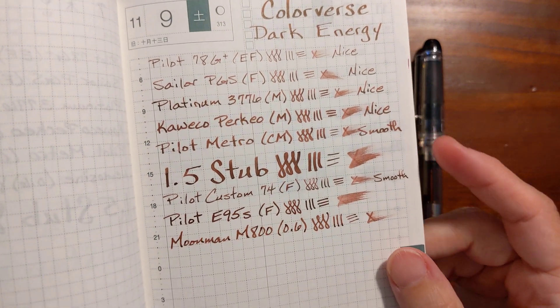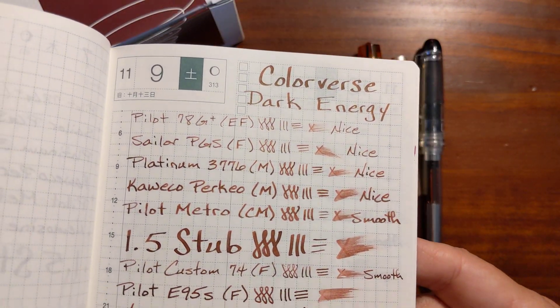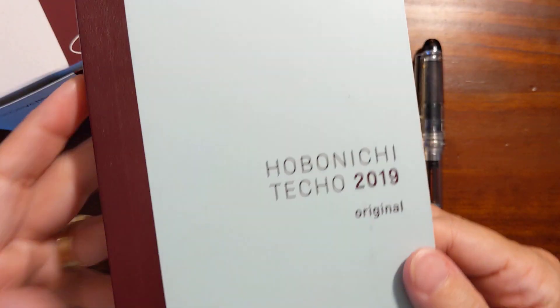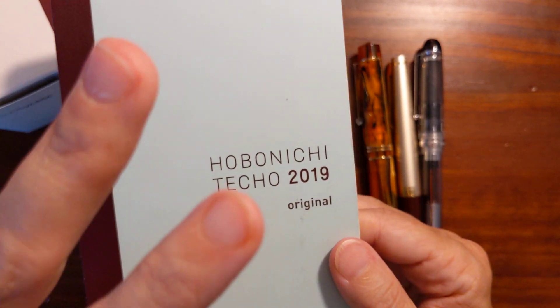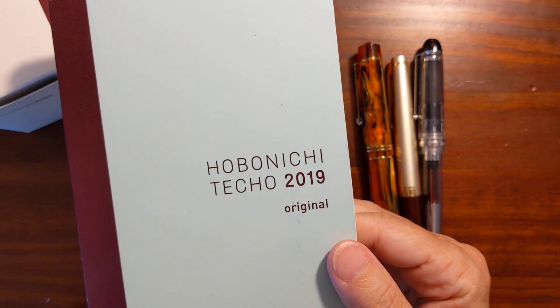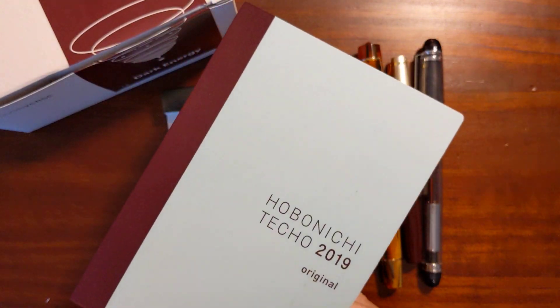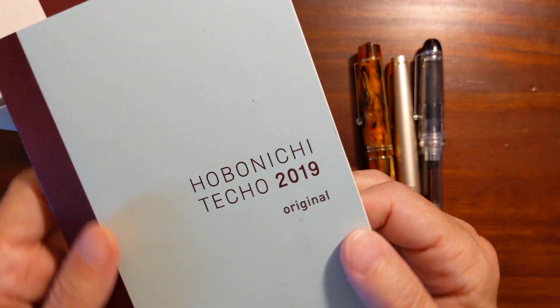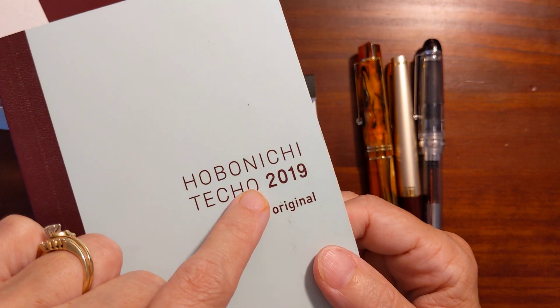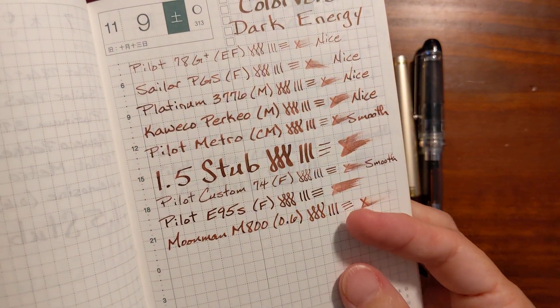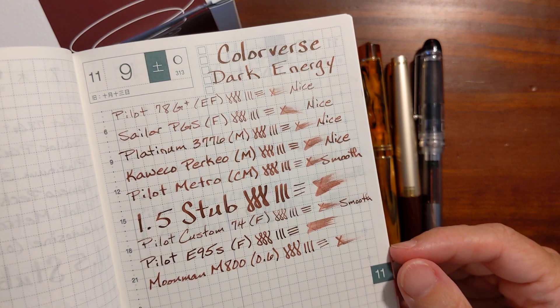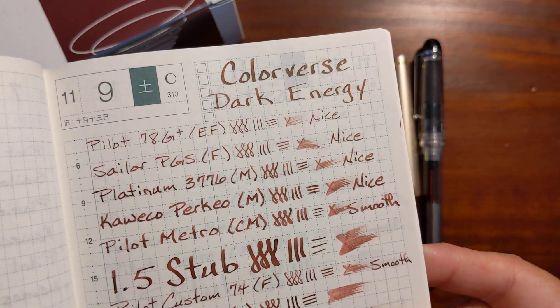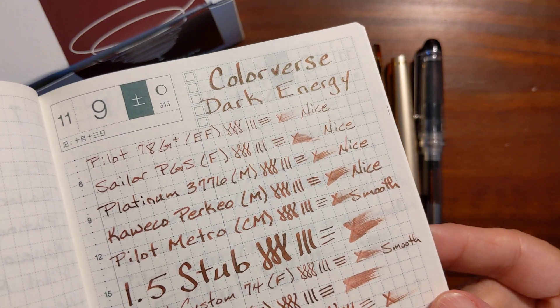I'm debating whether I should get a Hobonichi. I've never owned a Hobonichi Cousin, the A5 size. It's double this size, this is A6 and this is an old planner I just use as a notebook. But I just love the paper.